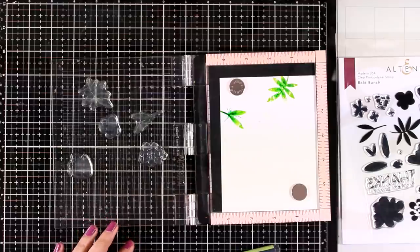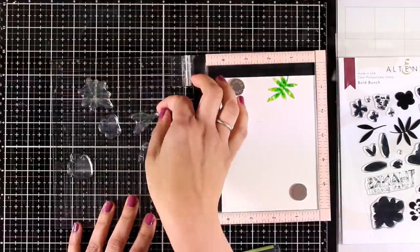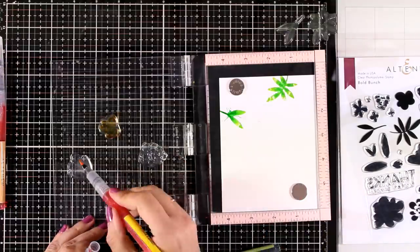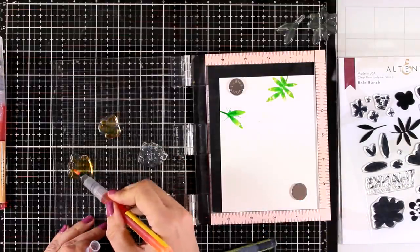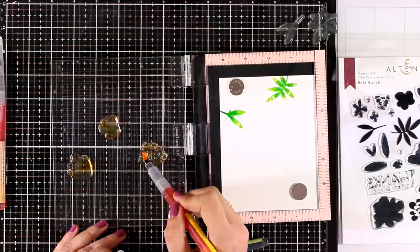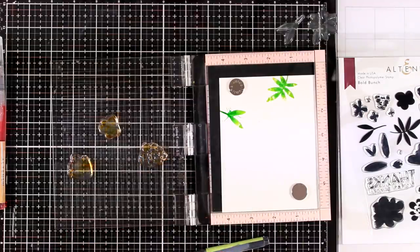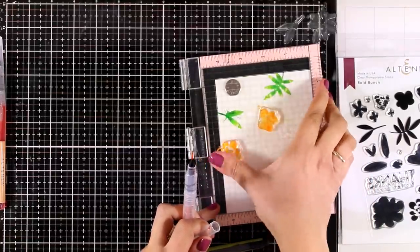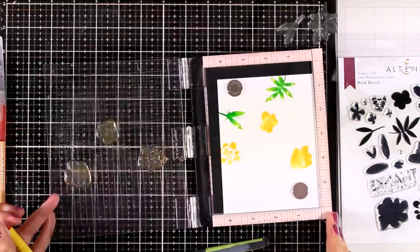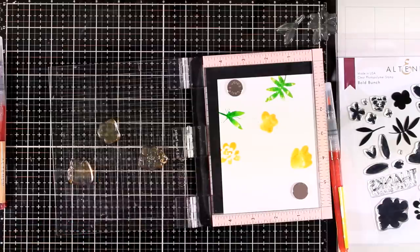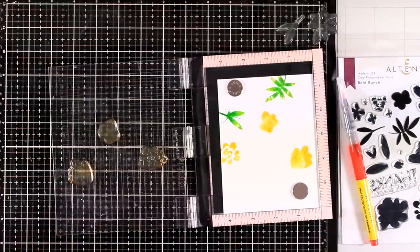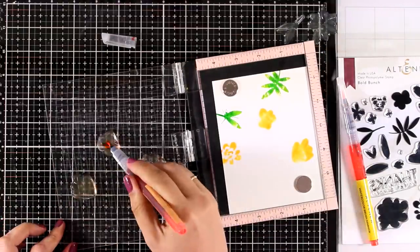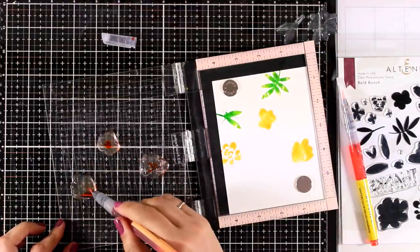Now I'm going to clean up those stamps and I will move on to the flowers. Again I will repeat the same technique. First I'm going to apply the lighter color which is Fresh Lemon and I'm going to apply the color, spray a little bit of water, stamp the images and then I will go back and add a little bit of the darker shade which is Sun Kissed only at the center or at the base of a flower just to add some variation on the color.